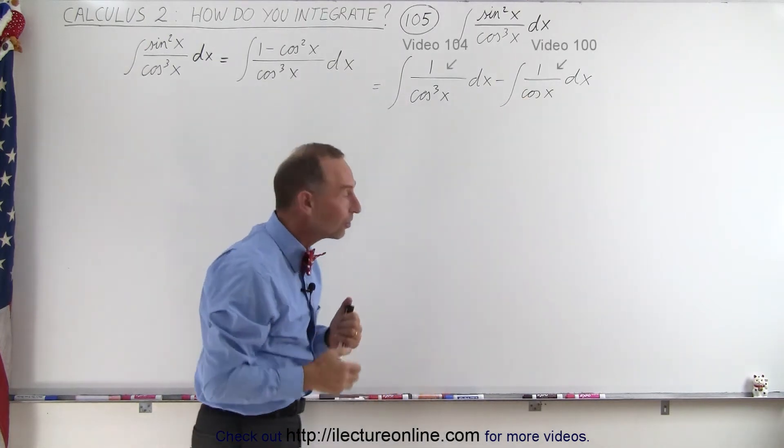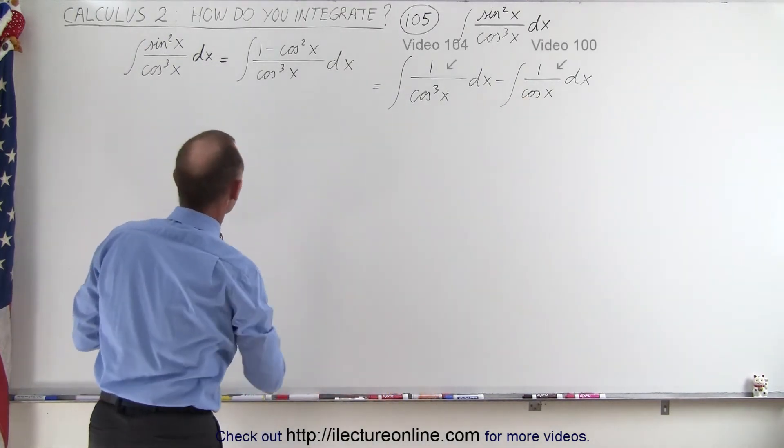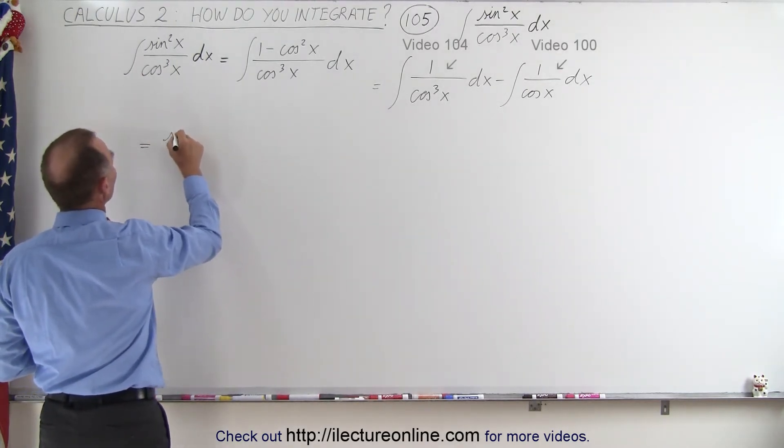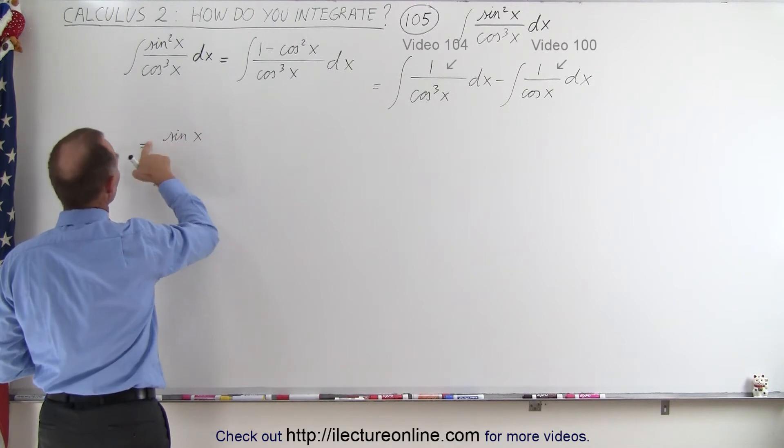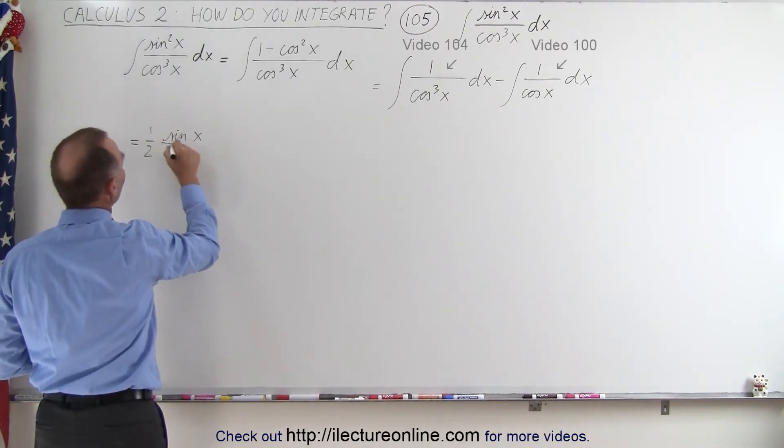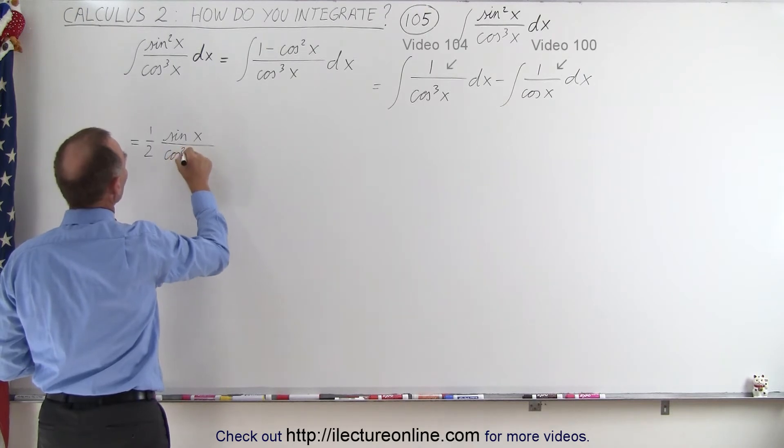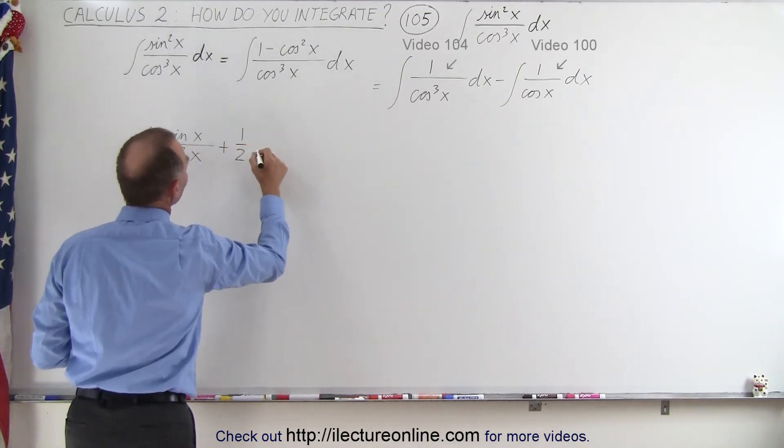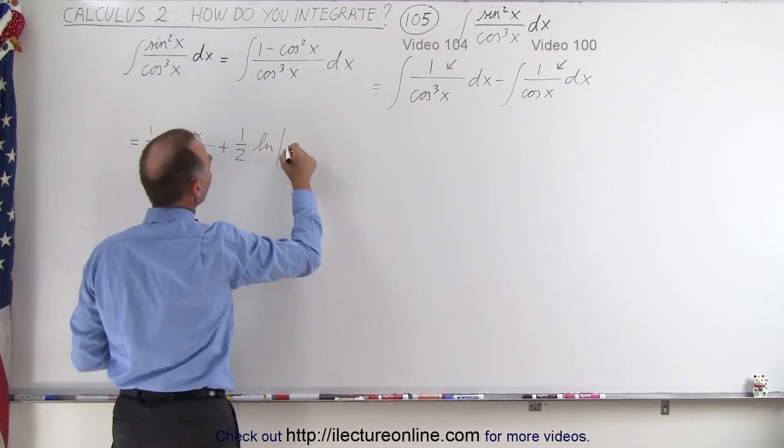So we pull those two solutions together to see what happens. So for the first integral, that's going to be equal to 1 half, the sine of x divided by the cosine square of x, plus 1 half times the natural log of the secant of x plus the tangent of x plus the constant of integration.